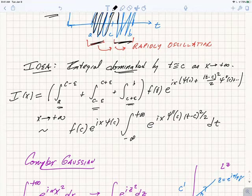We do the expansion in the neighborhood of t equals c of both the pre-factor f and the phase function ψ. We're going to assume, as x goes to infinity, that everything is dominated by this middle integral.